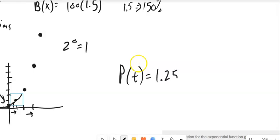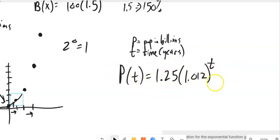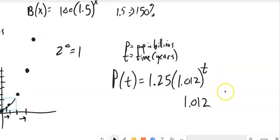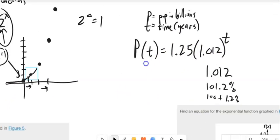If I look at this equation where the population at a given time is 1.25 times 1.012 to the t, where t is in years and p is the population in billions, I can read this equation. The initial population when the time is zero is 1.25 billion. Each time t increases by 1, we're multiplied by 1.012. That's like 101.2%, which is 100% plus 1.2% more. So this population is projected to be growing by 1.2% every year, and that percent compounds and keeps getting larger.